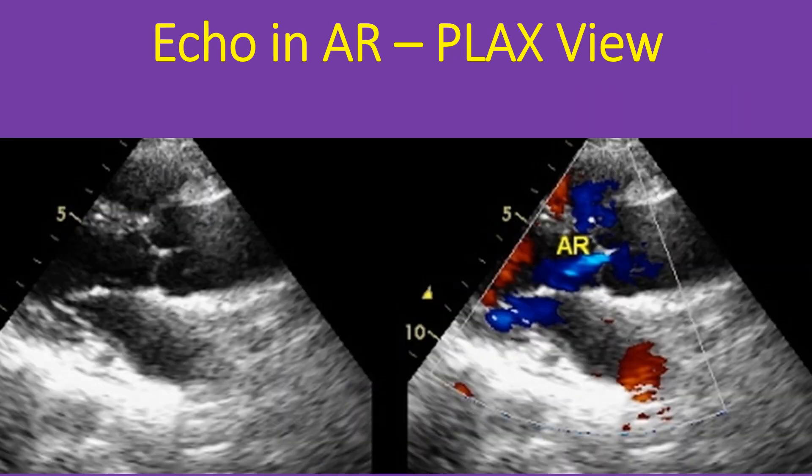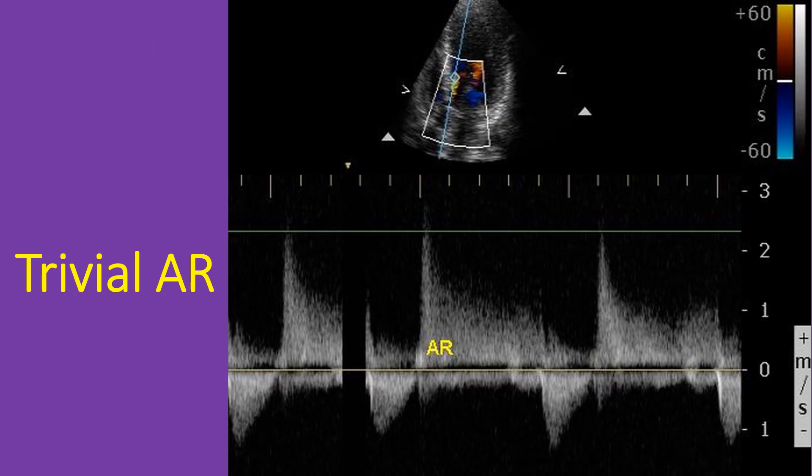Parasternal long axis view showing a small AR jet. Such a small AR jet will be taken as trivial AR with no hemodynamic significance. Left atrium and left ventricle are not dilated. Trivial aortic regurgitation on Doppler interrogation from the apical 5-chamber view is seen as a 2D image in the upper panel. An incomplete image of the jet is obtained when the regurgitation flow is less, as in trivial or mild AR.